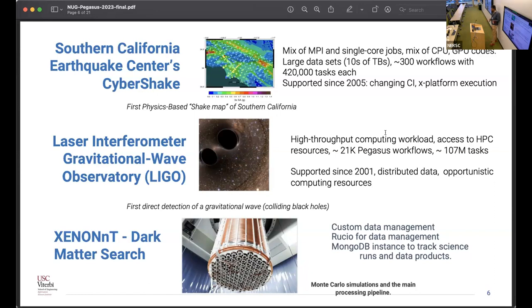SCEC uses Pegasus to usually run either on Exceed or DOE resources such as Summit at Oak Ridge. We also have LIGO, which a lot of you would have known. They don't run MPI based workflows. Instead LIGO's computing workflow is more high throughput computing oriented. One of the main pipelines in the LIGO search detection, which is the PyCBC pipeline, is exclusively run through Pegasus.